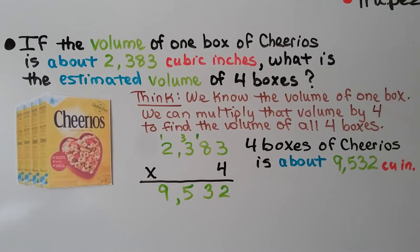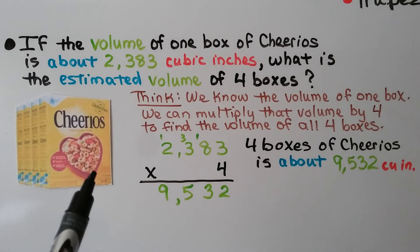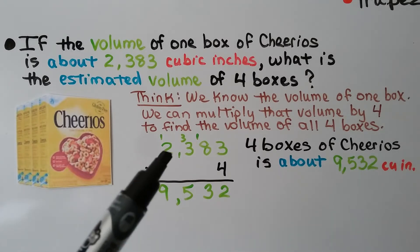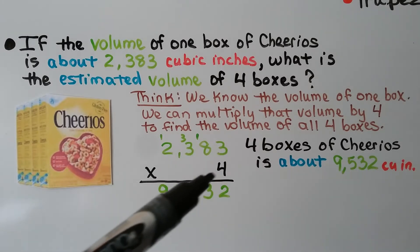If the volume of one box of Cheerios is about 2,383 cubic inches, what is the estimated volume of four boxes? We know the volume of one box, so we can multiply that volume by 4 to find the volume of all four boxes: 2,383 times 4.